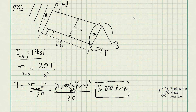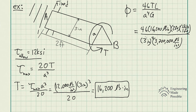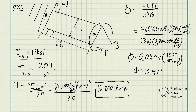Now let's solve for the angle of twist using the equation written previously. The angle of twist is 46 times the torque times the length of the shaft divided by A to the fourth power and the shear modulus of elasticity. Plugging in: 46 times 16,200 pound-inch times 24 inches (converting 2 feet), divided by 3 inches to the fourth power and the shear modulus of 3,700,000 pounds per square inch. We get 0.0597 radians, which converts to 3.42 degrees as the angle of twist at point B.